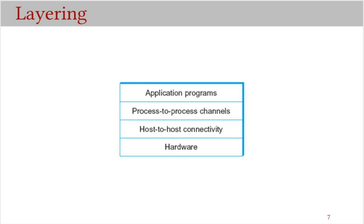Here is a simple example of layering. We have added two levels of abstraction between hardware and application. The first layer of abstraction is host-to-host connectivity and the second one is process-to-process channels. This lower layer provides host-to-host connectivity while abstracting away the details of the underlying network. The process-to-process channel builds upon this host-to-host connectivity layer and provides a process channel abstraction, which might provide reliable message delivery service even in the face of occasional packet losses. A decomposition like this allows us to break network software development into manageable smaller parts.